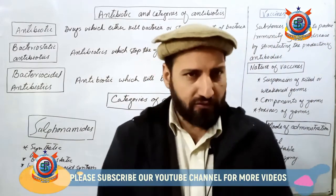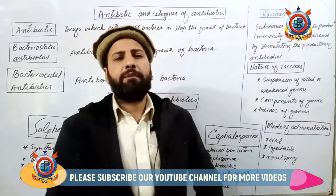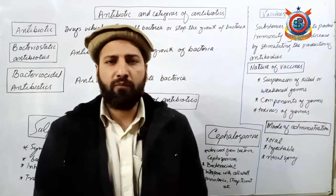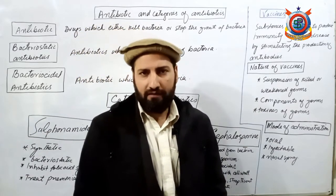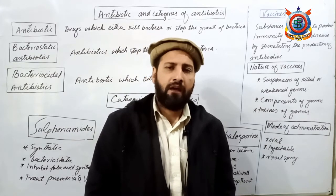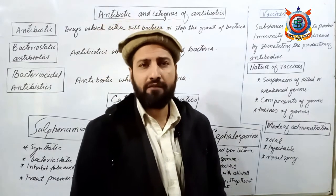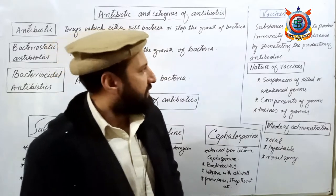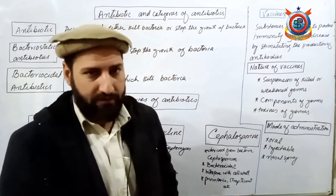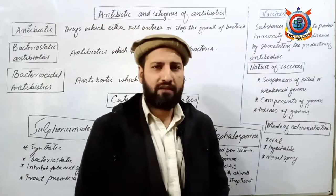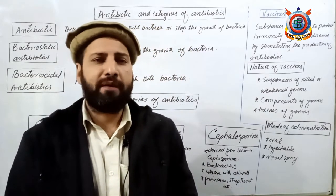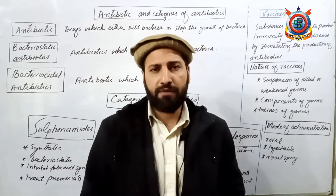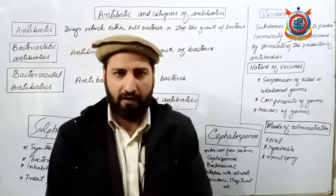اب ہمارا next topic ہے vaccines۔ Vaccine وہ chemical substances ہیں جو جب ہمارے body کے اندر چلے جاتے ہیں تو ہمارا immune system activate ہو جاتا ہے اور antibodies پیدا کرنا شروع کر لیتا ہے۔ Definition: vaccines are substances prepared to produce immunity against a disease by stimulating the production of antibodies۔